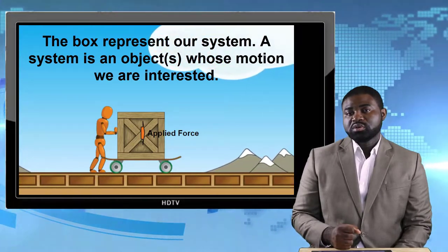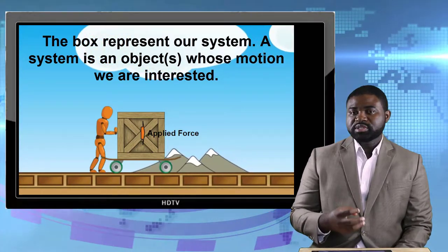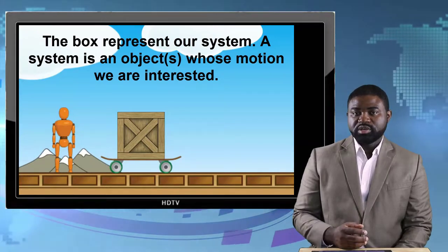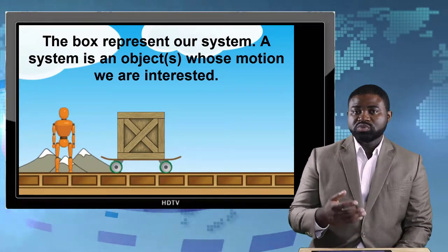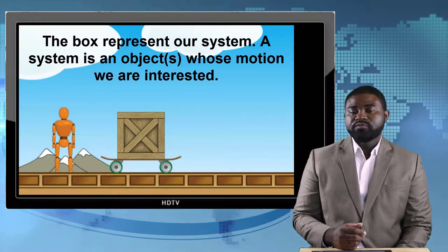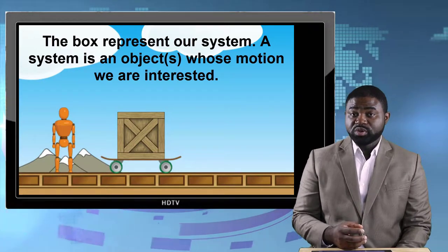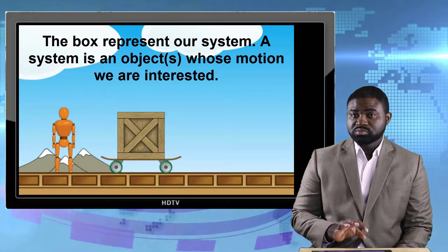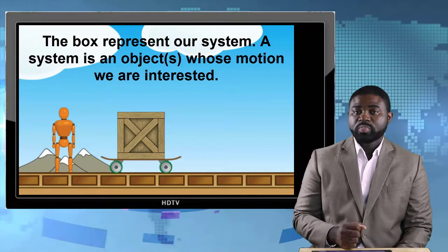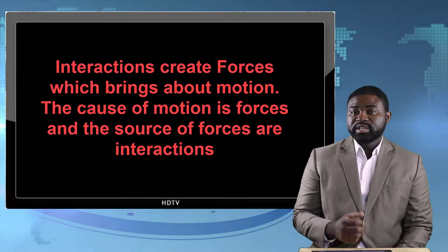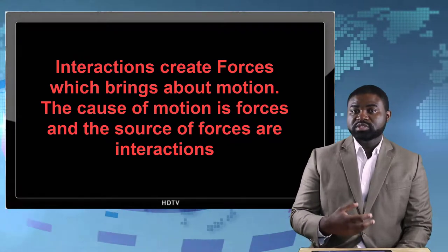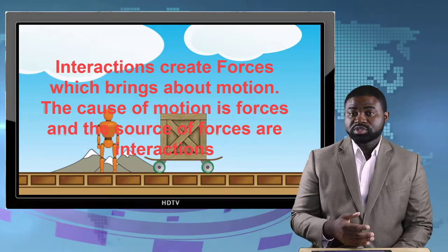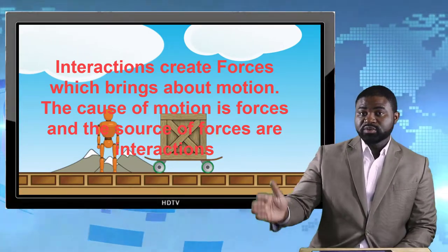Now it is important for you to understand systemic thinking. Because once you identify the system, then automatically you will know what the system is interacting with. For example, if the box is our system, then automatically we know that the box is interacting with you pushing the box as well as interacting with the earth. Therefore, identifying the system helps us to know what the system is interacting with, and subsequently will also help us to know the type of forces asserted on the system. Remember, interactions generate forces.